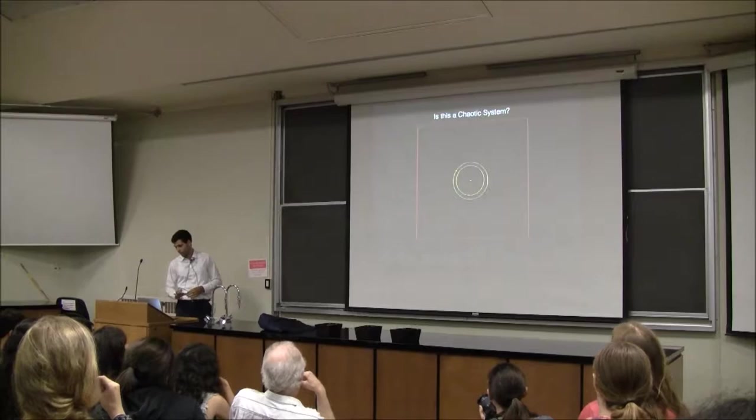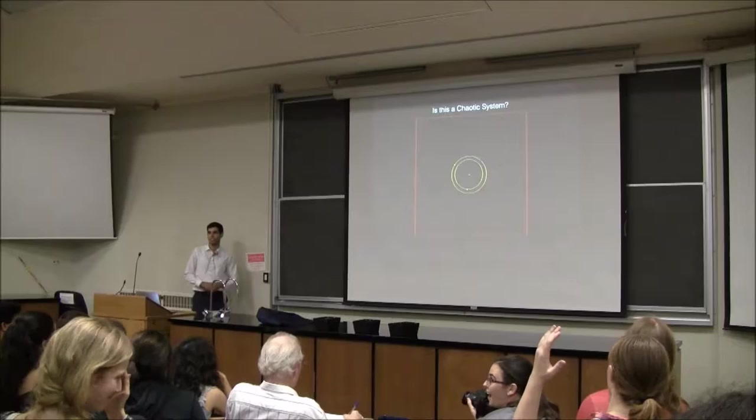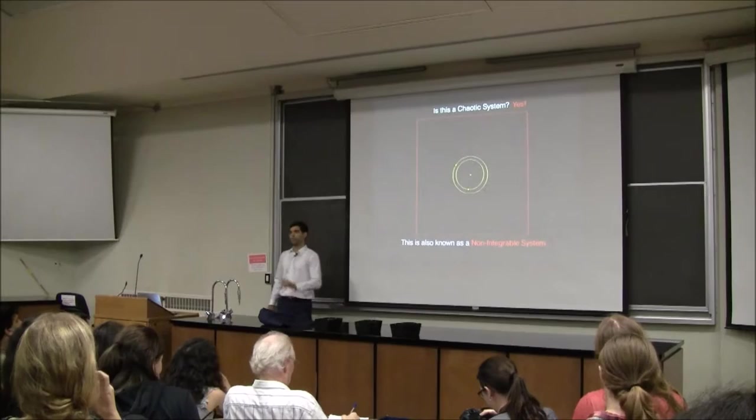Let's do the next most complicated thing: add one more planet, so now we have two planets and a star. This is a chaotic system. This is also known as a non-integrable system — the opposite of an integrable system. But what are the implications?